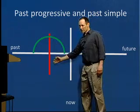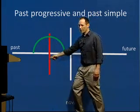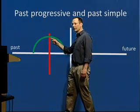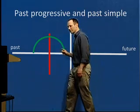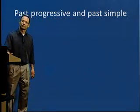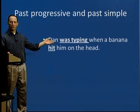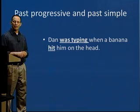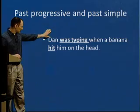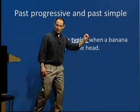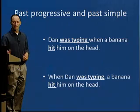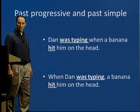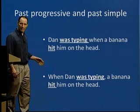The red line is going to show the banana hit Dan on the head. The past progressive is the thing in progress — so Dan was typing, and he probably continued typing after that. Let's look at the sentences: 'Dan was typing when a banana hit him on the head.' In this sentence, no comma, because the main clause is first and the time clause is second. And here we do have a comma because the time clause is first: 'When Dan was typing, a banana hit him on the head.'